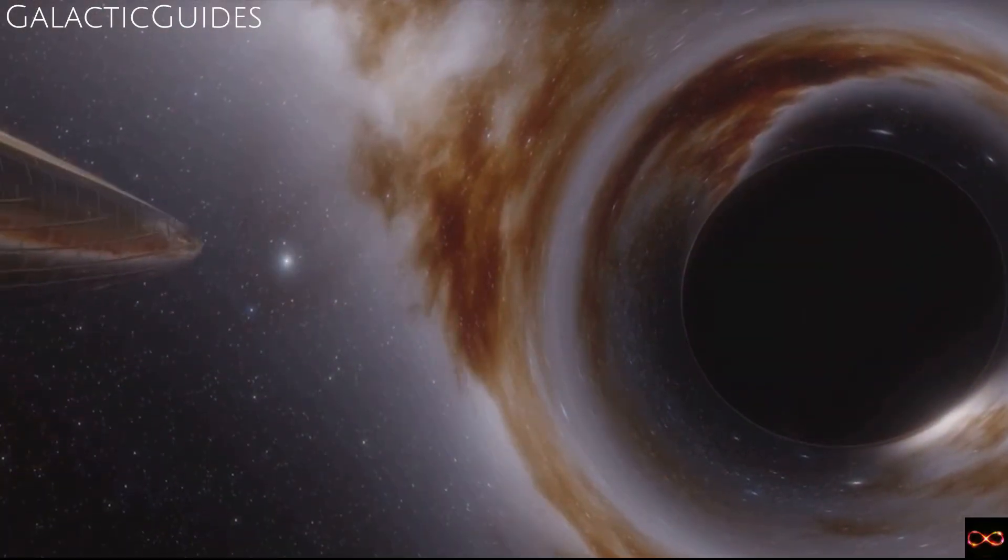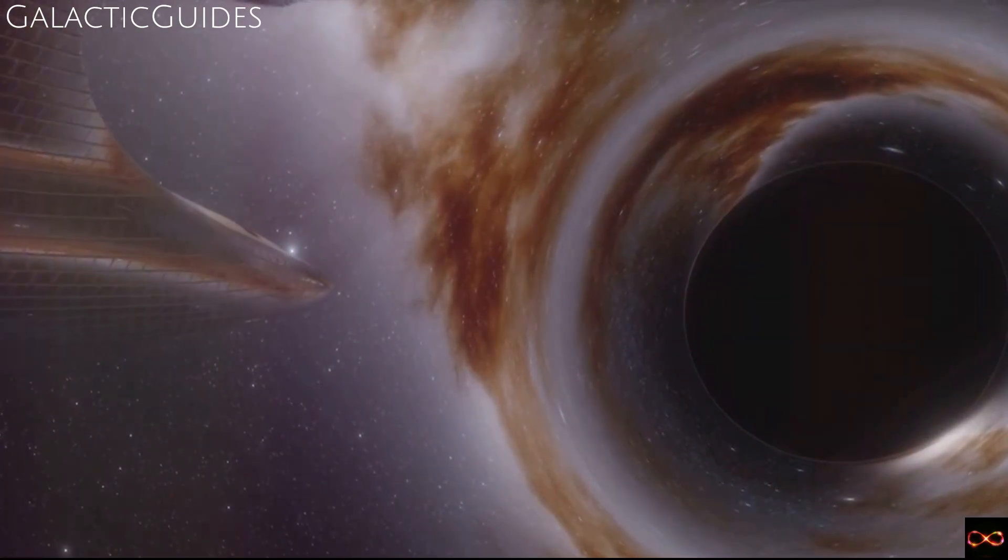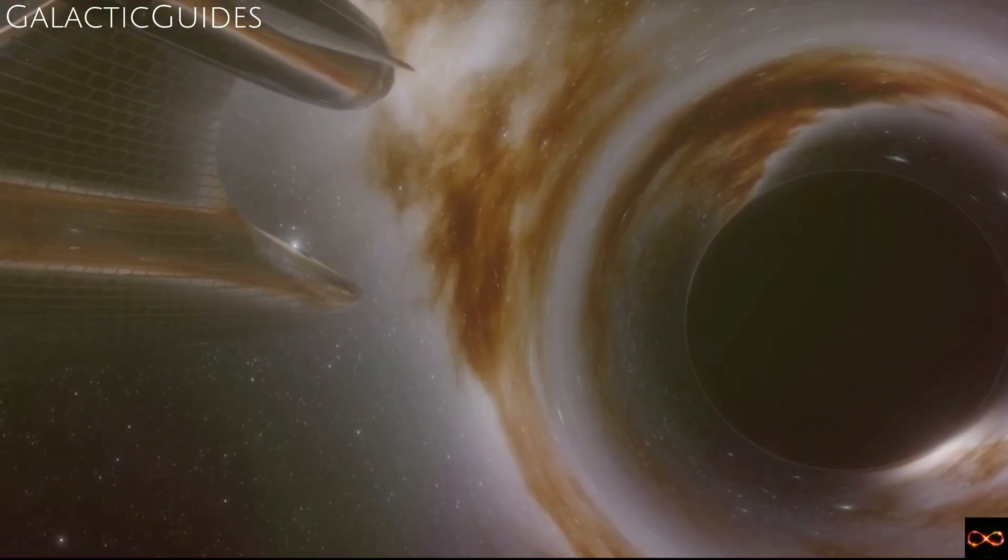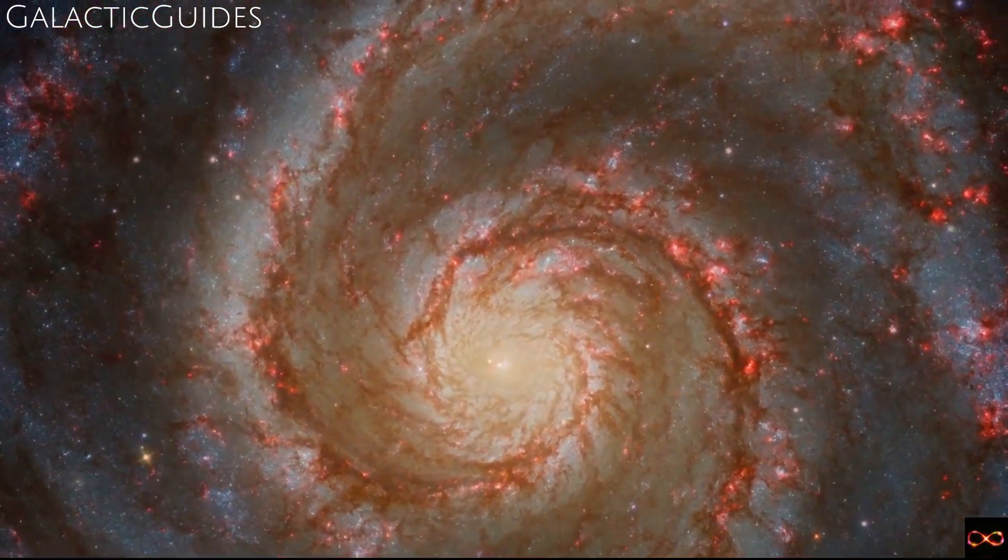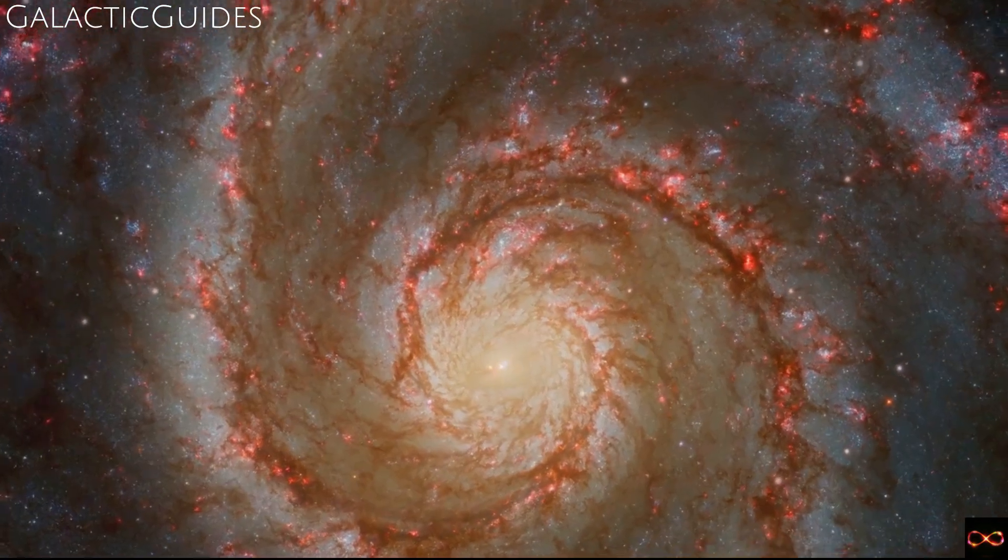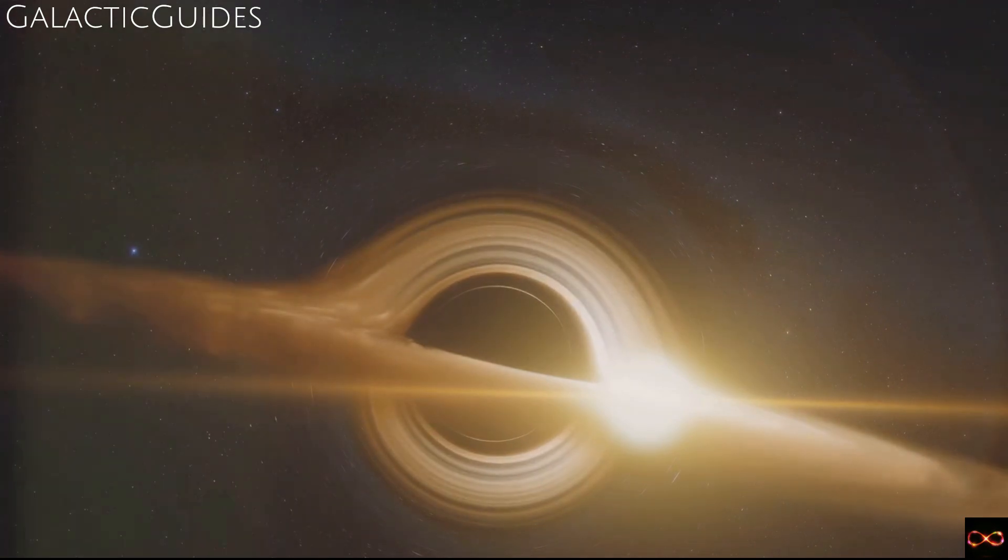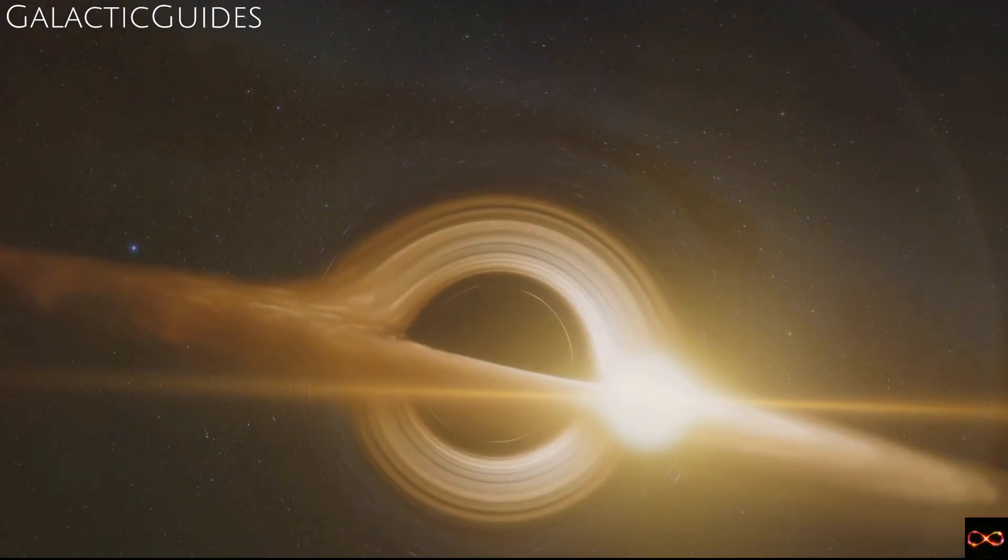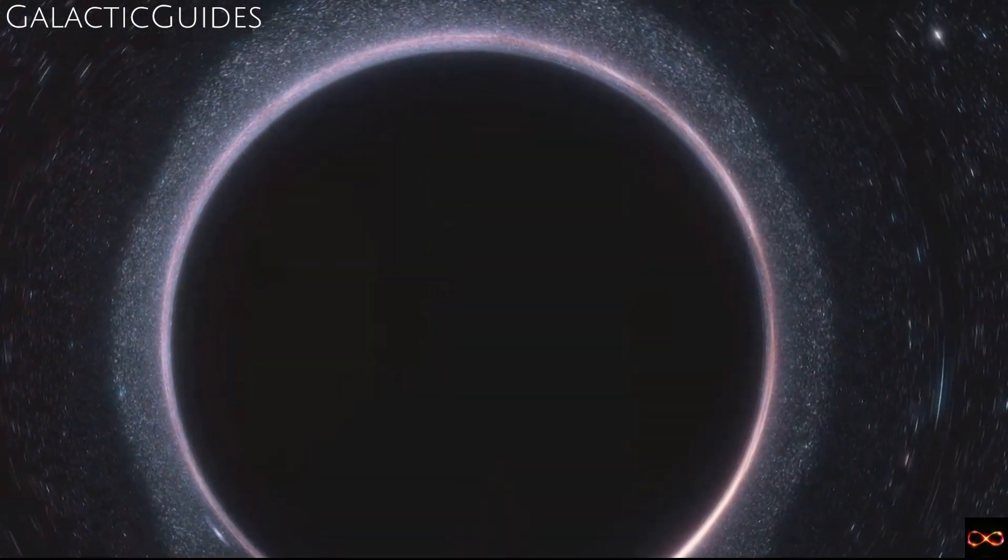A black hole is a region in space where the gravitational pull is so strong that nothing can escape its clutches, not even light. Imagine a whirlpool, an unstoppable force that pulls everything towards its center. Now picture this whirlpool in the vast expanse of space, relentlessly pulling in planets, stars, and even light itself. That is what a black hole is like.